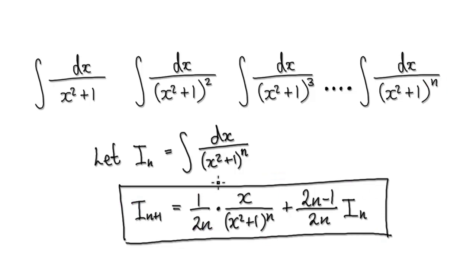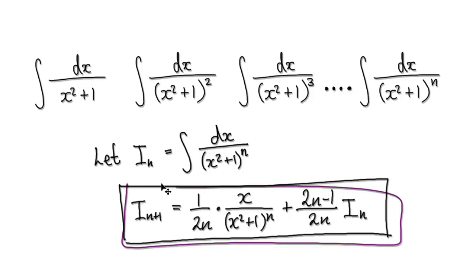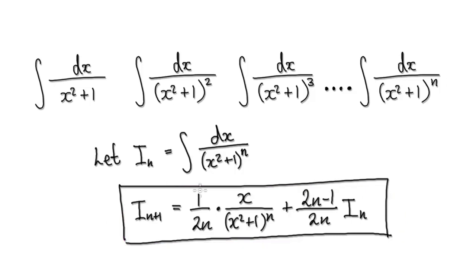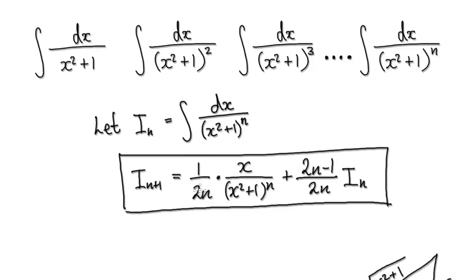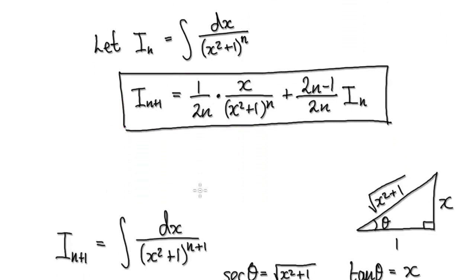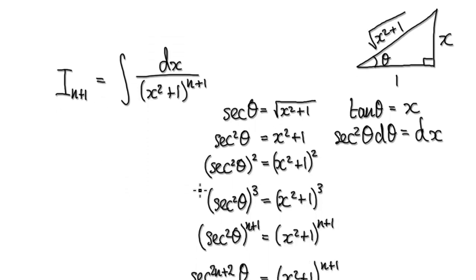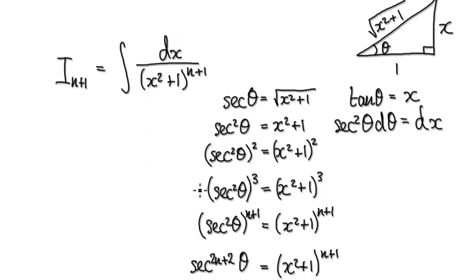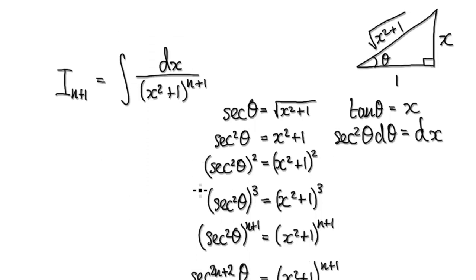You will see what I mean when I give you an example. So our first step is to come up with this relation — that's our aim at the moment. So let's try and integrate it for I_{n+1}. I_{n+1} would be this thing to the power of n plus 1. So let's try and integrate this.